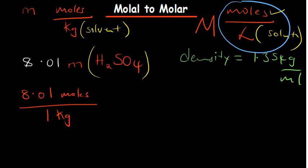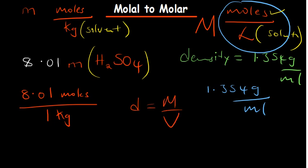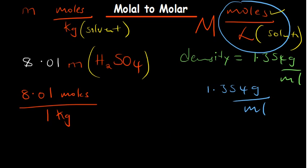To find the volume of the solution, since we've been given the density as 1.354 grams per milliliter, we need to find the mass of the solution first. Recall that density equals mass over volume, so if we have the mass of the solution and the density, we can find the volume. Our goal is therefore to find the mass of the solution.